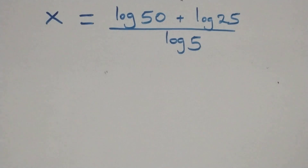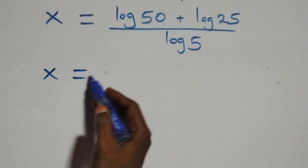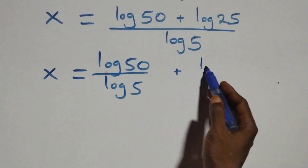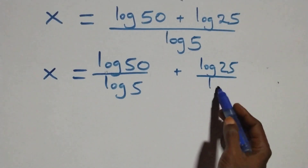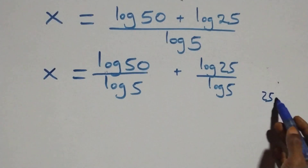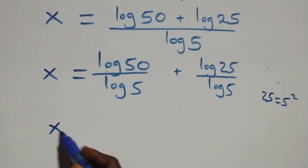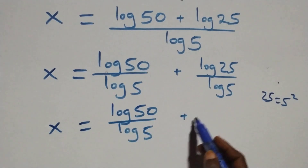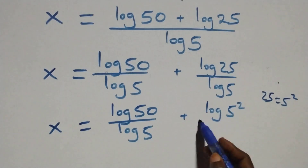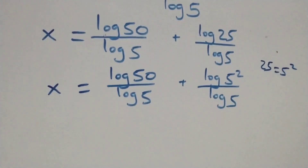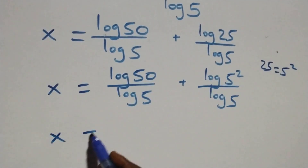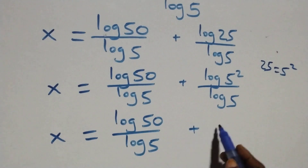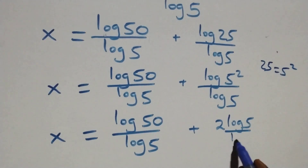Since 25 is 5 squared, we separate this into two fractions: x equals to log 50 over log 5 plus log 25 over log 5. We apply the power rule, so 2 comes in front, giving x equals to log 50 over log 5 plus 2 log 5 over log 5.